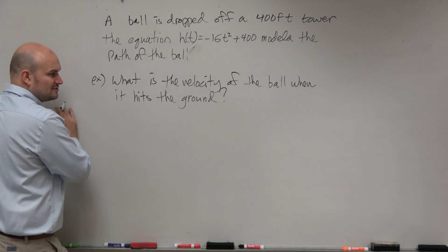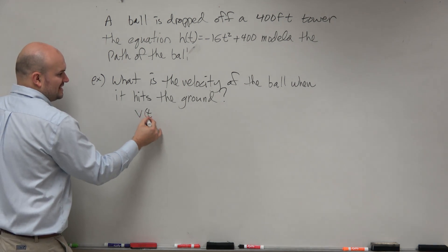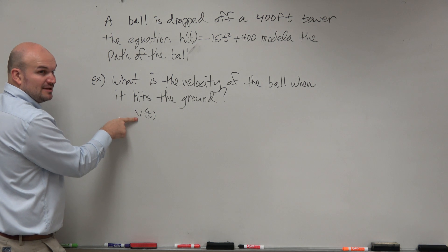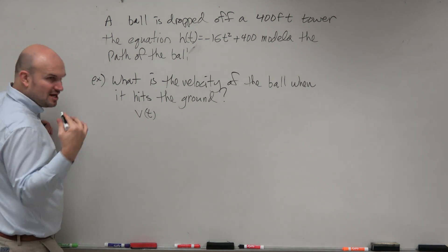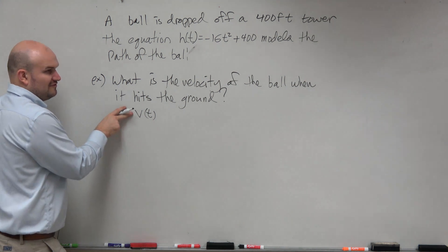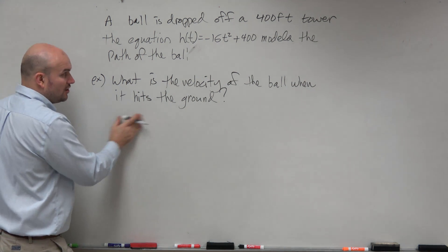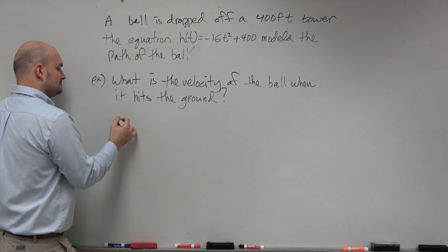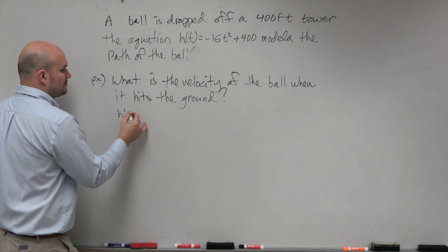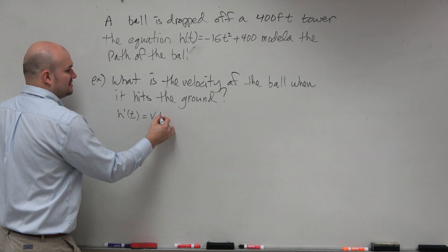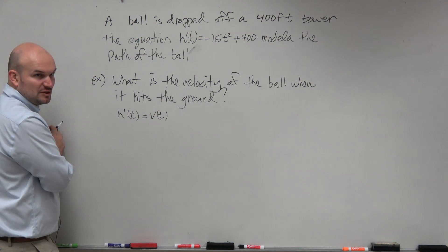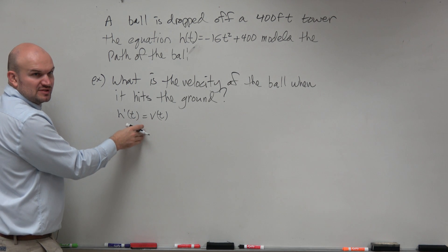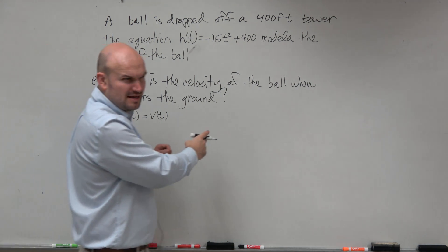Now, do not just go and say v(t), velocity, because we have no idea what v represents. Even though we know that we're talking about velocity, v could represent something else. So if you want the derivative of your position function to represent v(t), then just write a statement like this: h'(t) = v(t). Now we can use this exclusively as velocity.